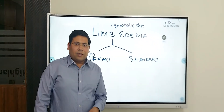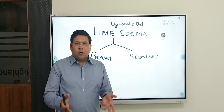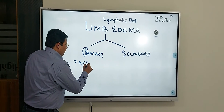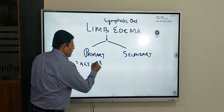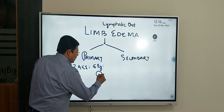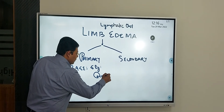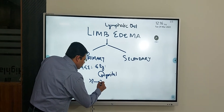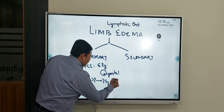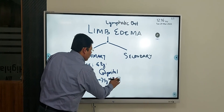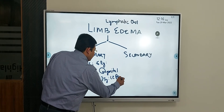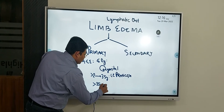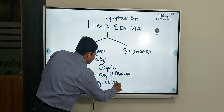Primary lymphedema is a lymphedema where the cause is not known. When we don't know the cause, it is classified based upon the age of the patient. If the age is less than or equal to 2 years, this is the congenital variety. If the age is more than 2 up to 35 years, that is known as lymphedema praecox. And if the age of the patient is more than 35 years, then that is known as lymphedema tarda.